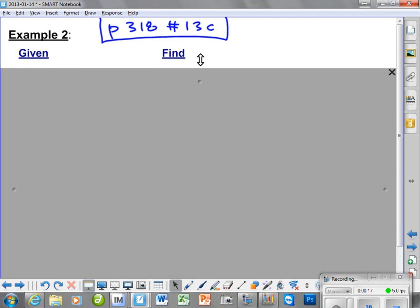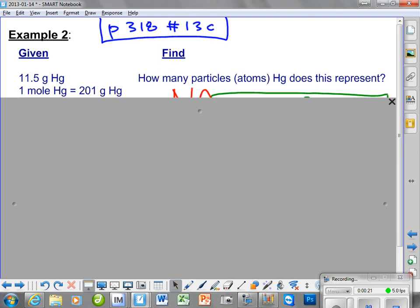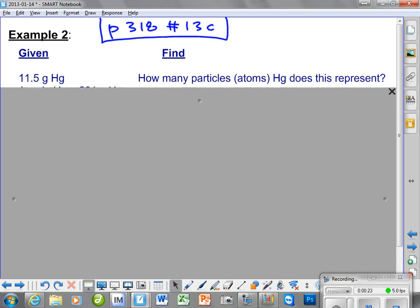Just like always we're going to have a given and a find. So our given in this case is 11.5 grams of mercury and the find is how many particles, and in this case the particles are atoms of mercury does this represent.